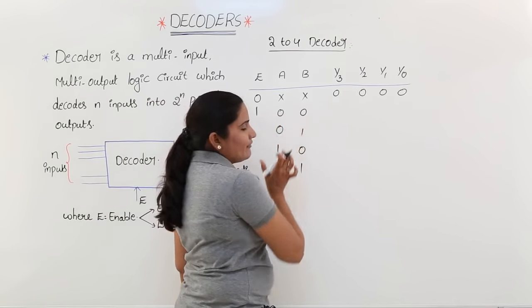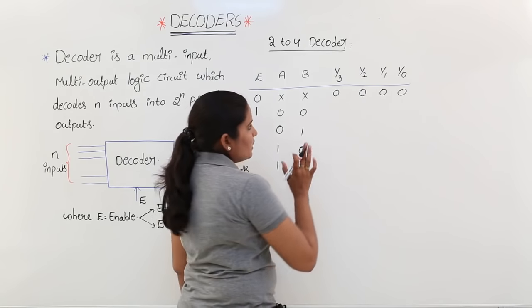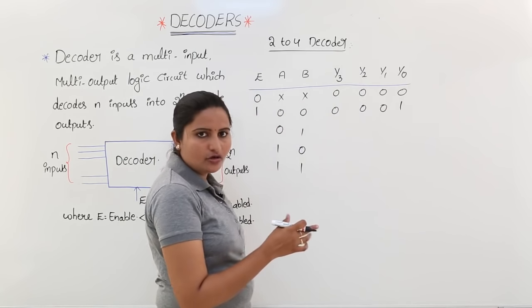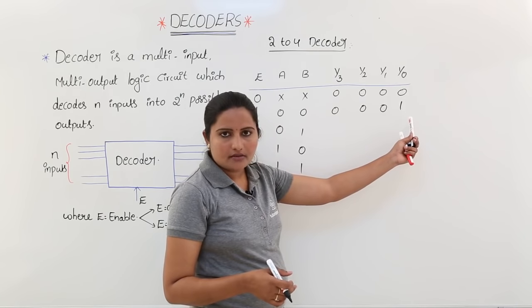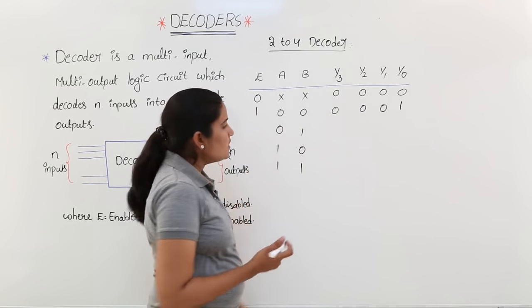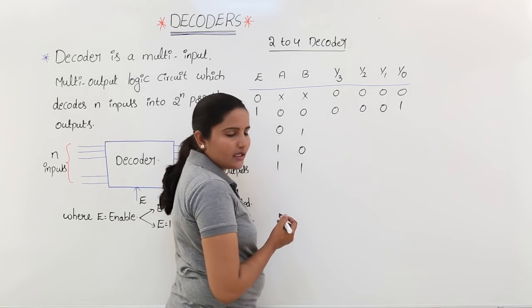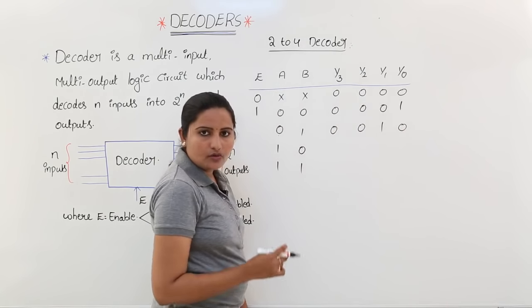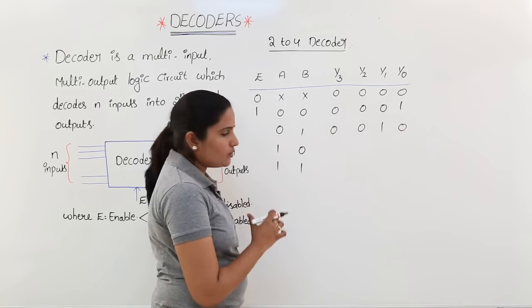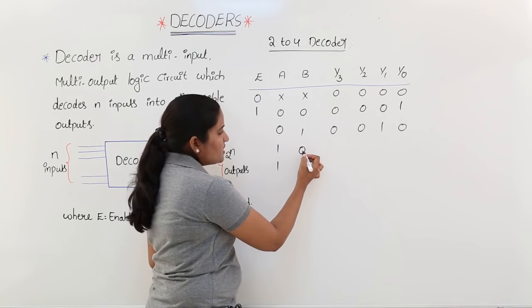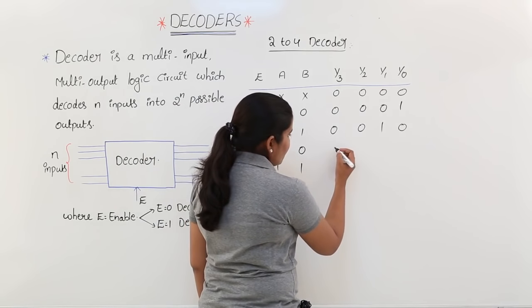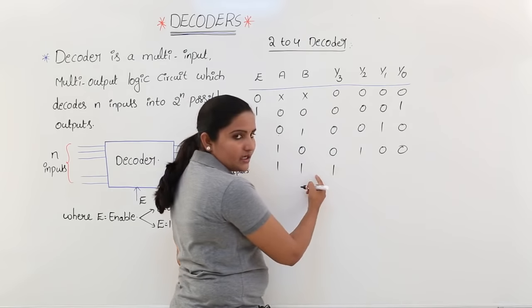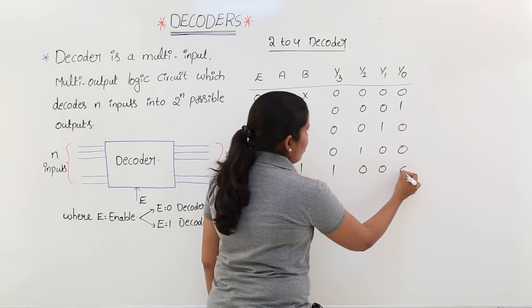If the input is 00, you need to put 1 at Y0 output. If the input is 01, the decoder will enable Y1 and the rest will be 0. If the input is 10, the decoder will provide 1 at the Y2 place. If the input is 11, the decoder will provide 1 at Y3. At a time, only one output line will be enabled.